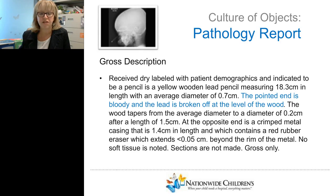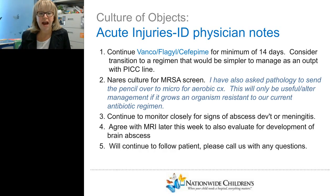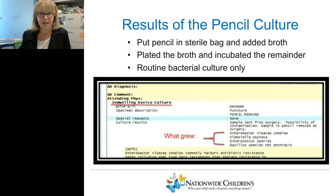There was no soft tissue noted on the pencil, but overall it was well worth sending to pathology. Notes from the ID physician who followed this case show he started empiric therapy covering a broad range of bacterial organisms. They also cultured for MRSA because the pencil went through the sinuses — if the patient were colonized with MRSA, that would be a concern. He also asked them to send the pencil to micro for aerobic culture, noting this would only be useful if an organism grew resistant to the antibiotic regimen he had initially chosen.